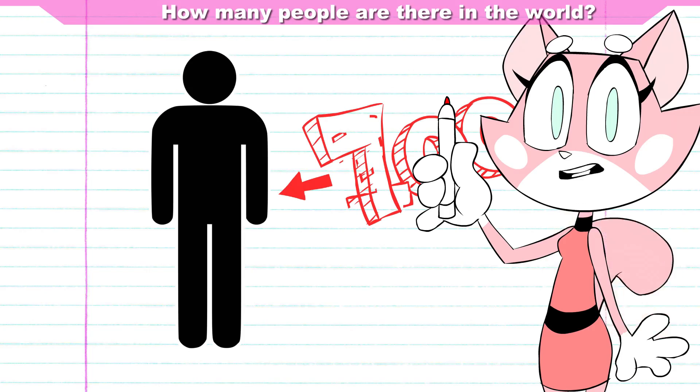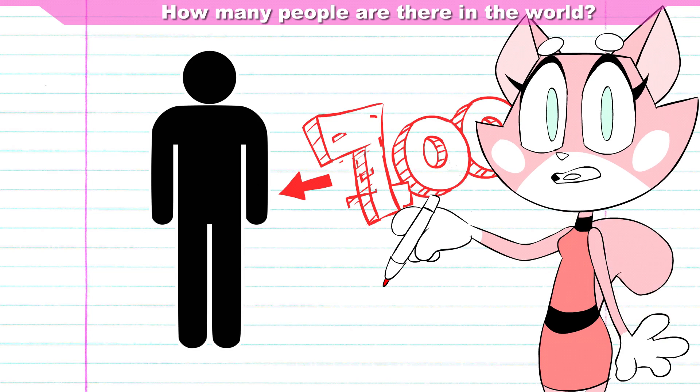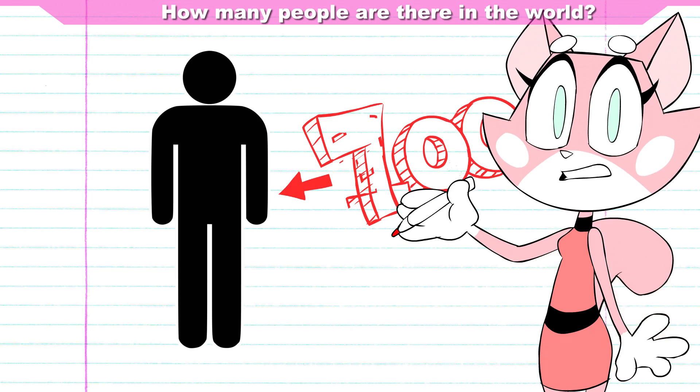There are more than 7 billion people living on Earth right now, not counting all the animals, and we might end up with more than 9 billion people in about 30 years.